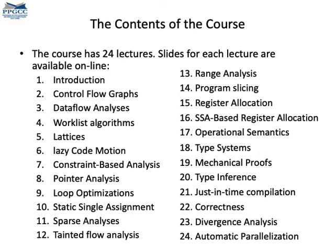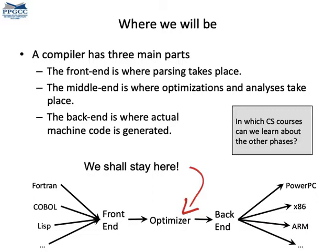In this course we will be studying what's called the middle end of compilers. A compiler typically has three parts: the front end, that deals with the high-level programming language; the back end, that deals with the low-level machine code; and the middle end, where we carry out analysis and optimizations — so that's where we will be. Usually the middle end works on some intermediate representation of code. There are many different forms of intermediate representation, for instance LLVM IR, WebAssembly, bytecode, Java bytecode, and PTX for graphics processing units.